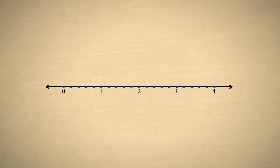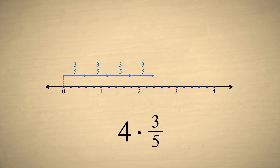If we want to multiply an integer times a fraction, for example four times three-fifths, this is the same as adding three-fifths four times. On the number line, we can see that this adds up to twelve-fifths. Multiplying an integer times a fraction doesn't change the size of the subdivisions, so the denominator is not affected. We simply multiply four times the numerator, three, to get the numerator of the result.